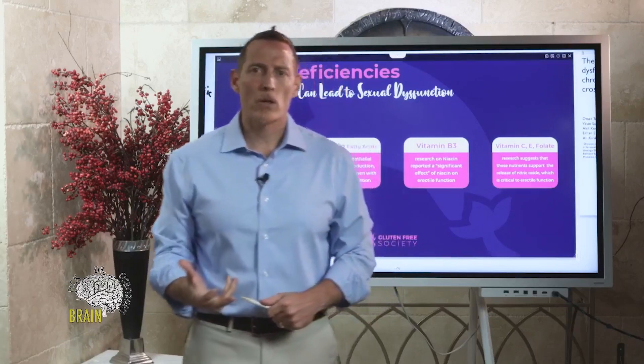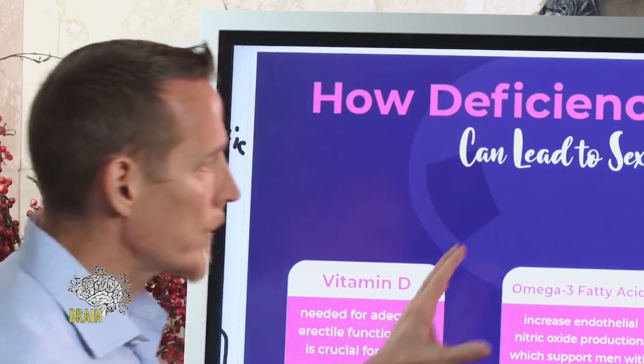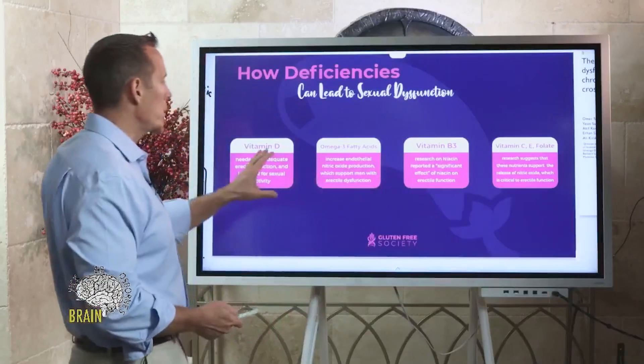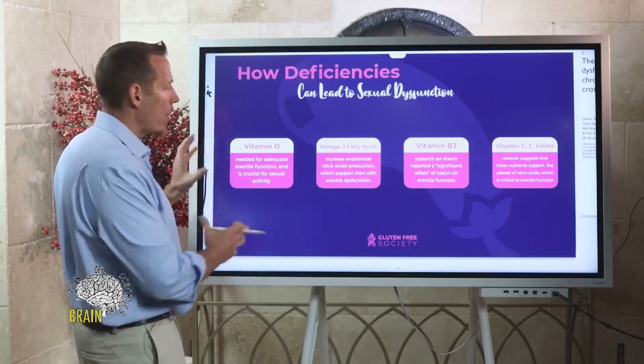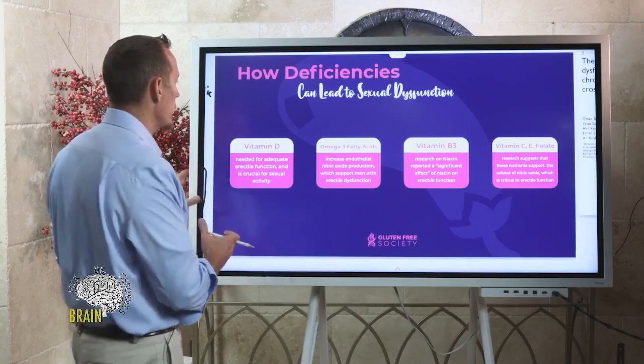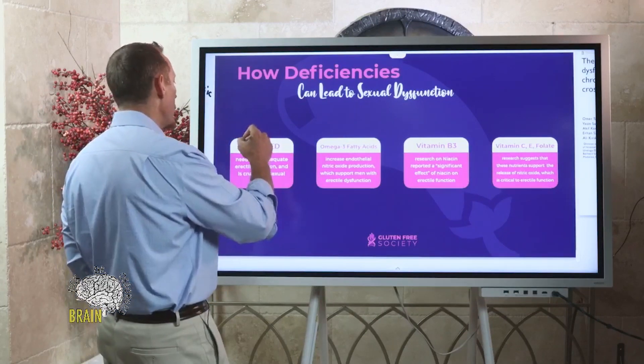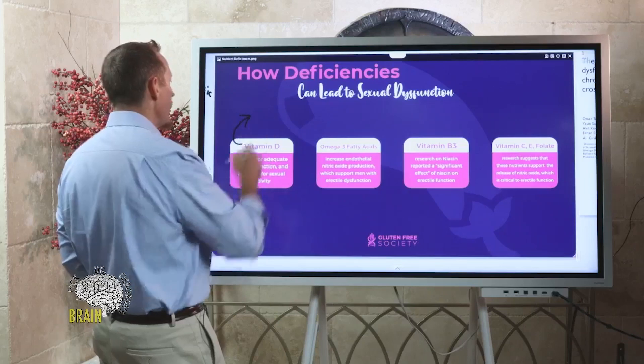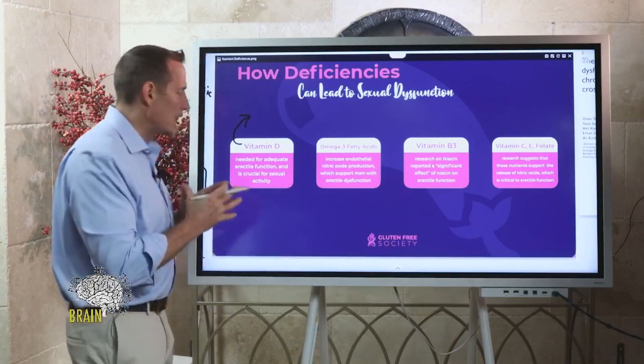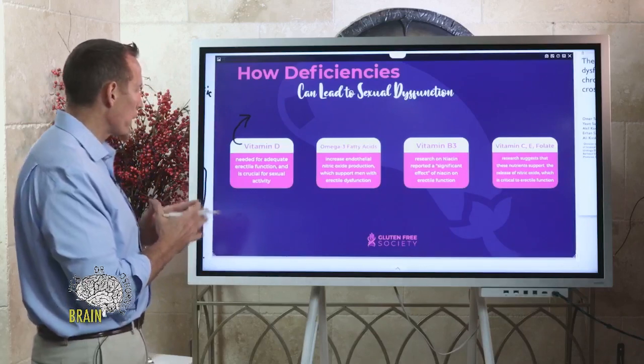Another aspect of gluten exposure and poor diet is malnutrition. We know gluten can impact the GI tract and cause vitamin and mineral deficiencies, and many of these can impact the quality of sexual function. Vitamin D is being studied more and more — we know that vitamin D deficiency can cause sexual dysfunction and erectile dysfunction in men. It's needed for adequate blood flow to the penis and is crucial for sexual activity. The last study I read showed that 60% of those diagnosed with gluten sensitivity had vitamin D deficiency at the time of diagnosis.